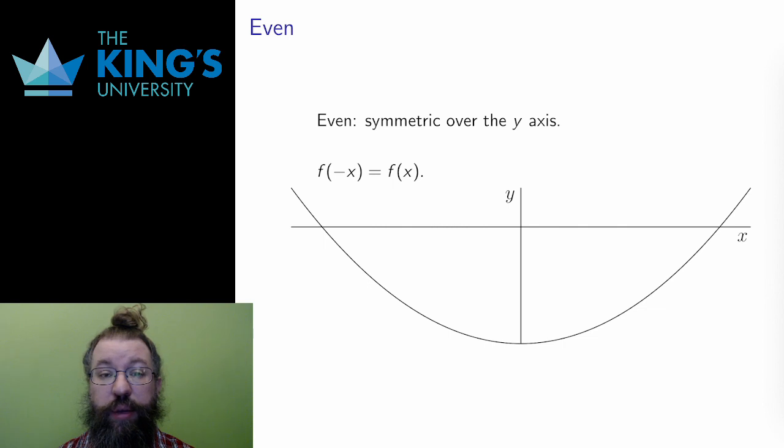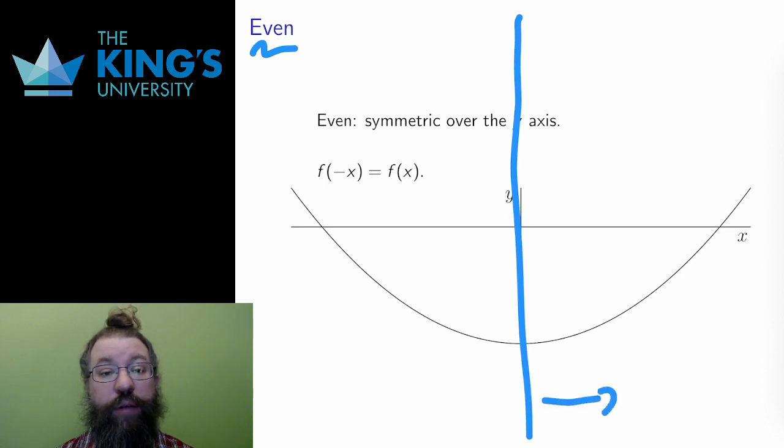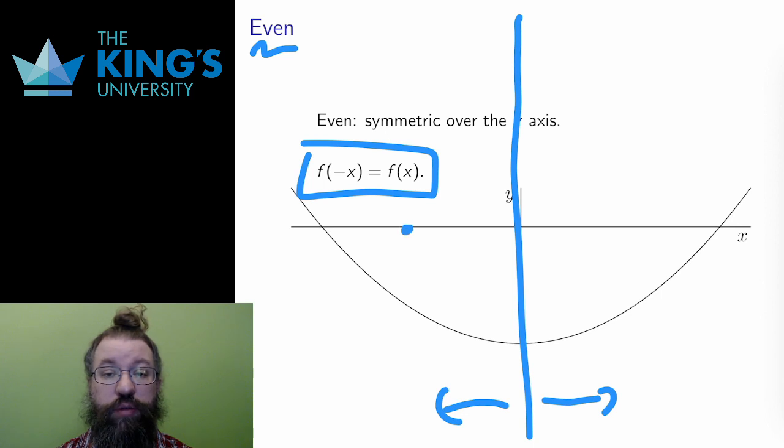Symmetry is a central idea in mathematics. For functions, there are three types of symmetry I want to mention. First, a function is called even if it has a mirror symmetry over the y-axis. That is, if I flip the graph over the y-axis, the shape stays the same. Algebraically, this is equivalent to f of negative x equals f of x. The values for negative and positive are the same.